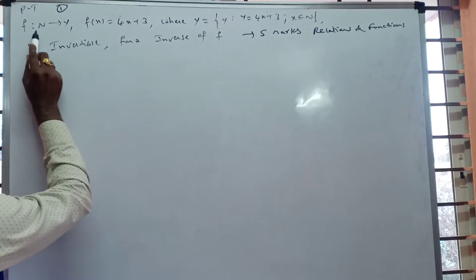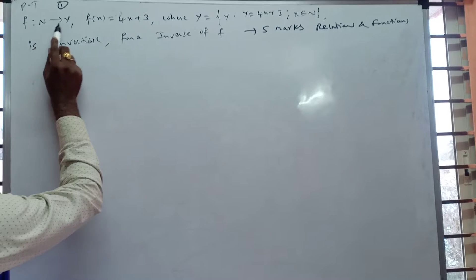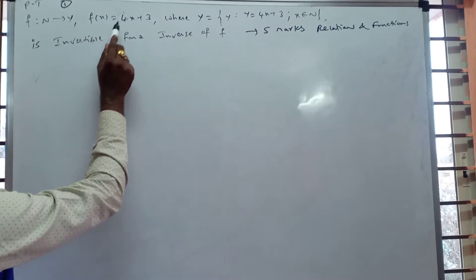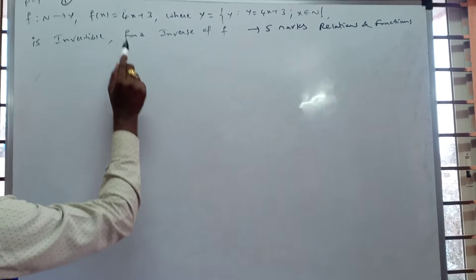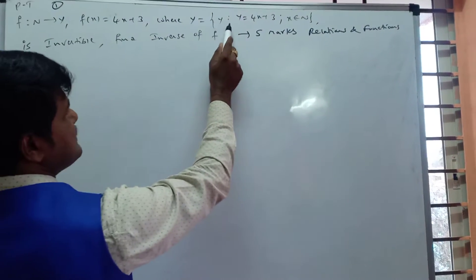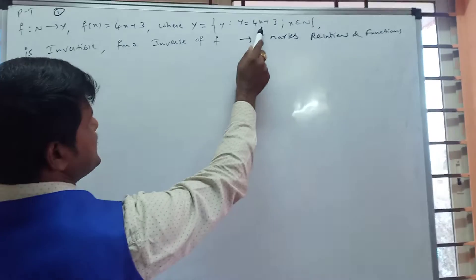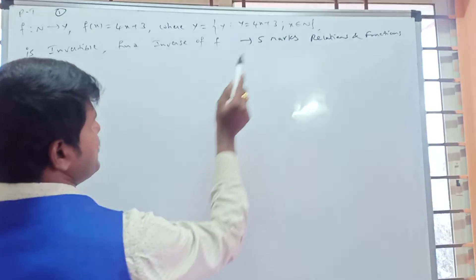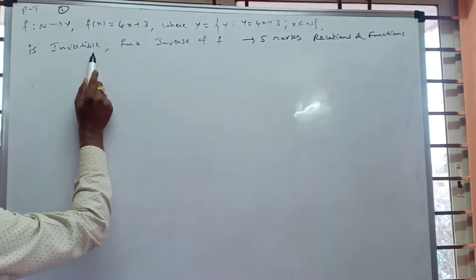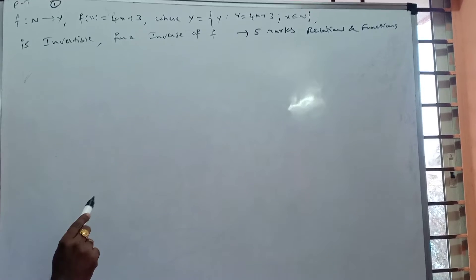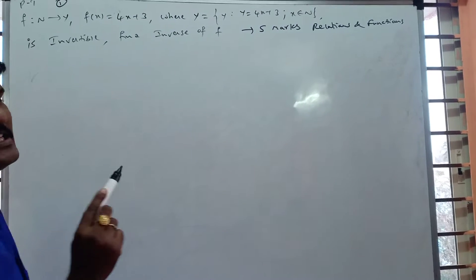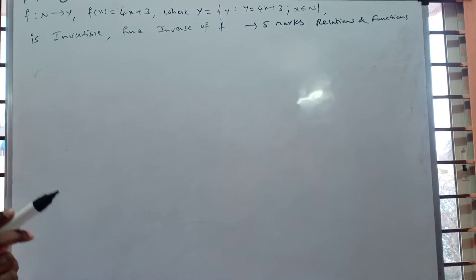Prove that f mapping N to Y, where f(x) = 4x + 3, and Y = {y : y = 4x + 3, x ∈ N}, is an invertible function. Also find the inverse of f. So, how do we solve this type of question?